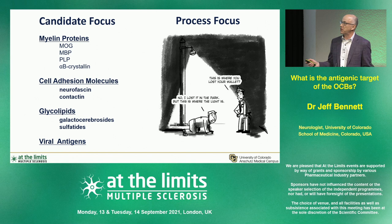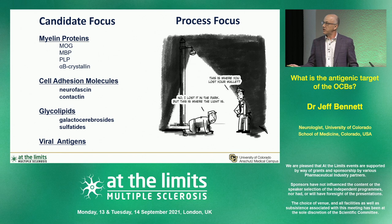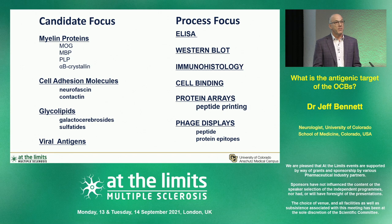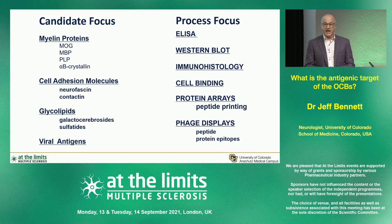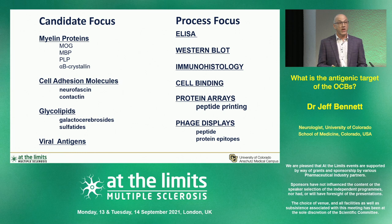There are lots of candidates for MS antigens, and multiple processes for looking for them — and some of these processes will inherently bias what you find. When it comes to targets, you can look at myelin targets, neuronal targets, lipid targets, and exogenous targets. When it comes to processes, you can look by ELISA, Western blot, or immunohistology, but you'll be hampered by looking for targets in their denatured state. You can look by cell binding assays — either live cell binding or fixed cells — and by protein and phage display that sometimes offer some conformational targets, but usually of low complexity. What you look for is essentially what you get.